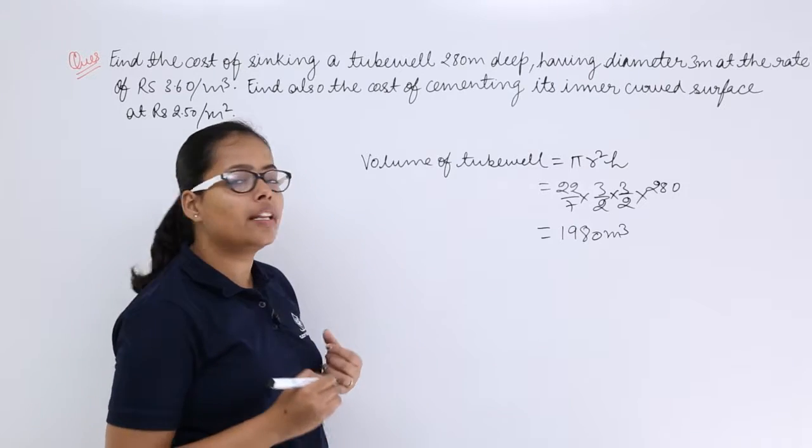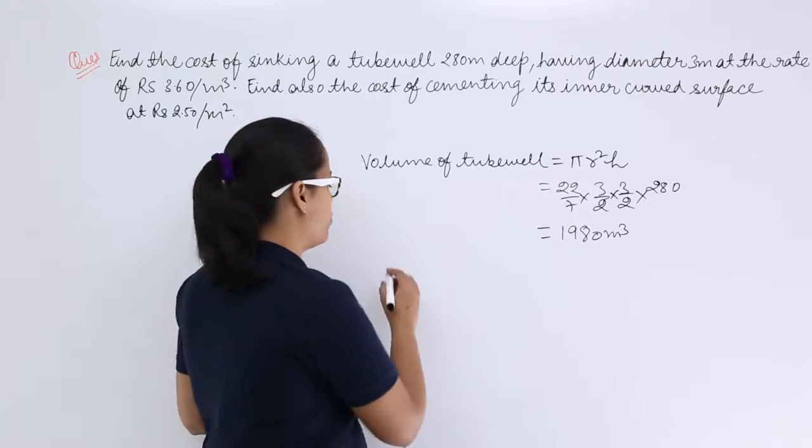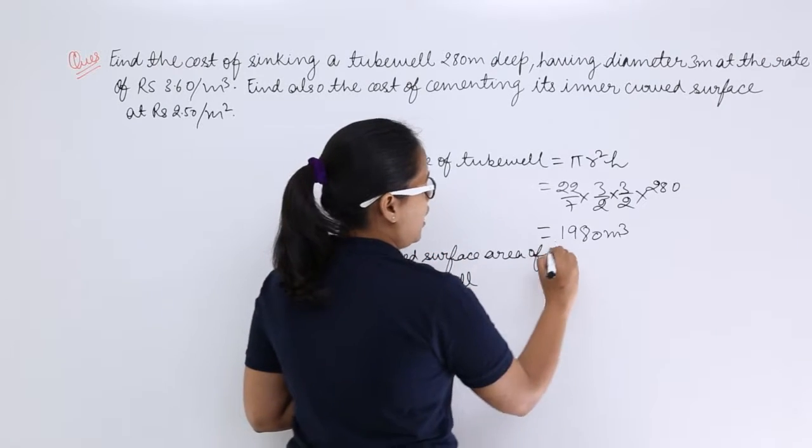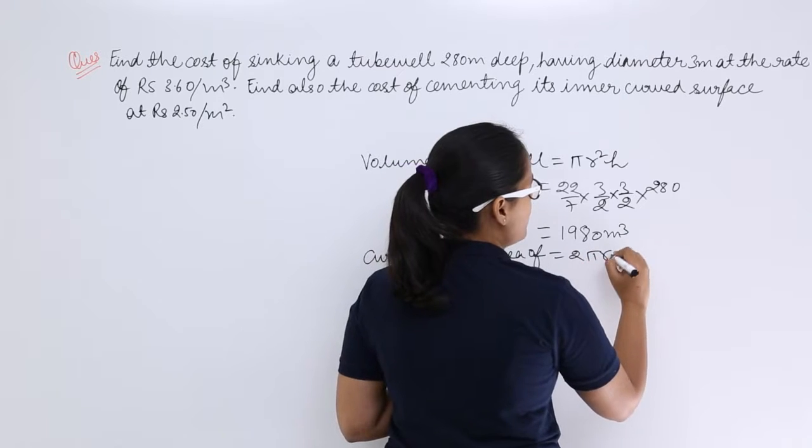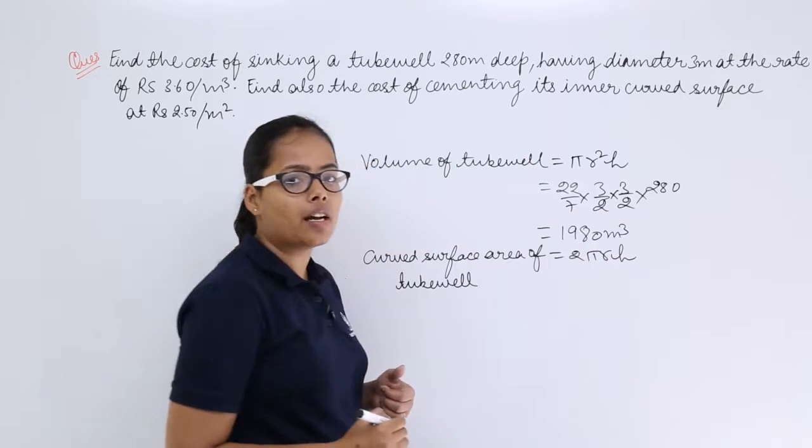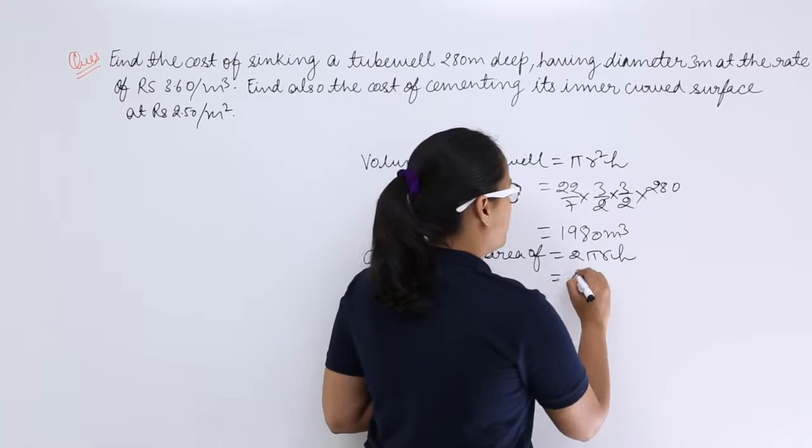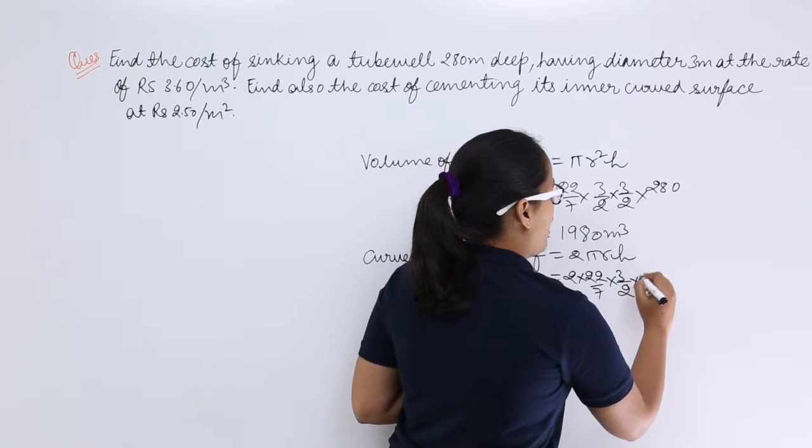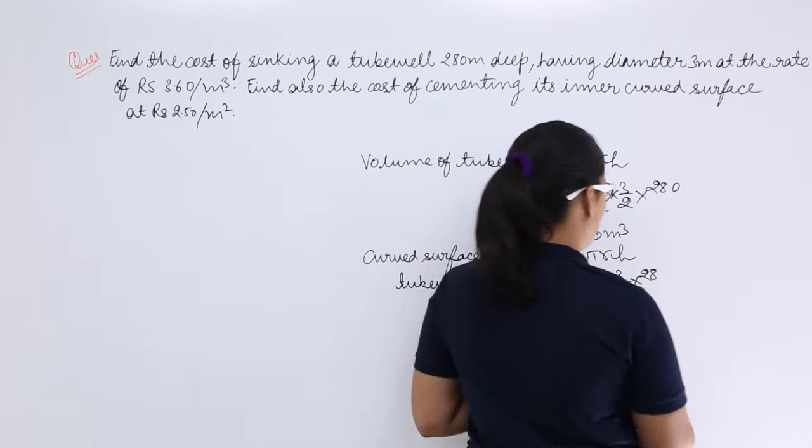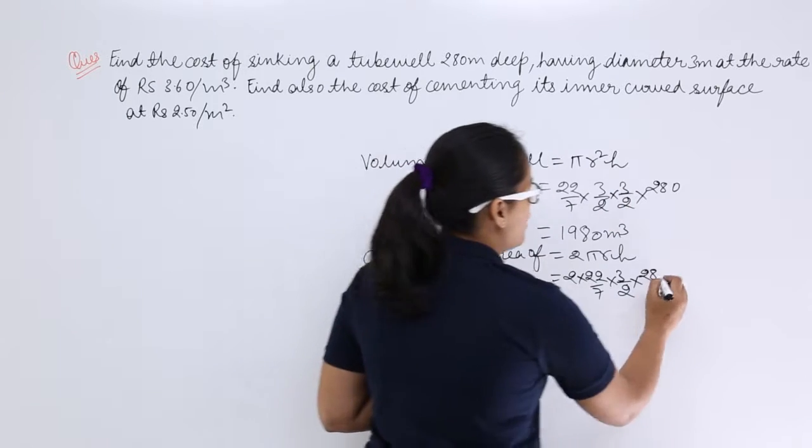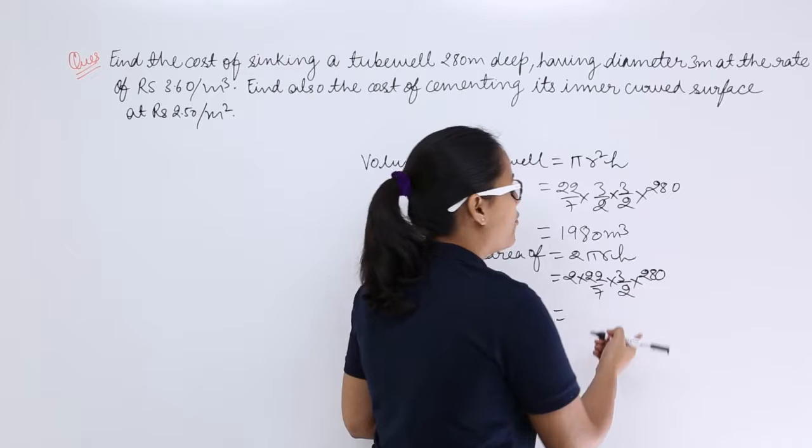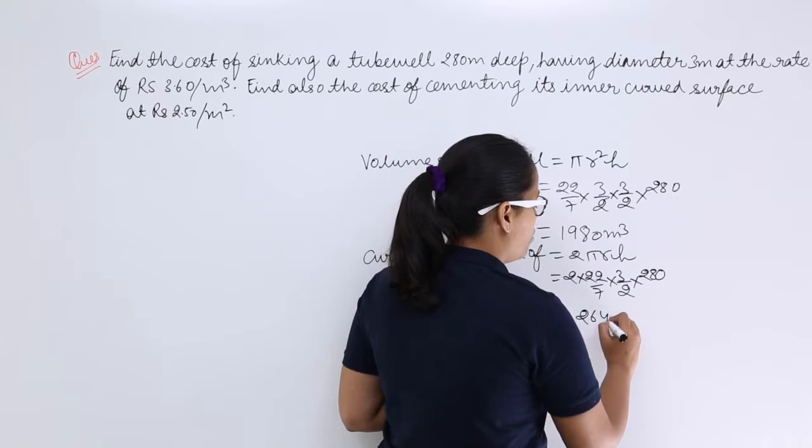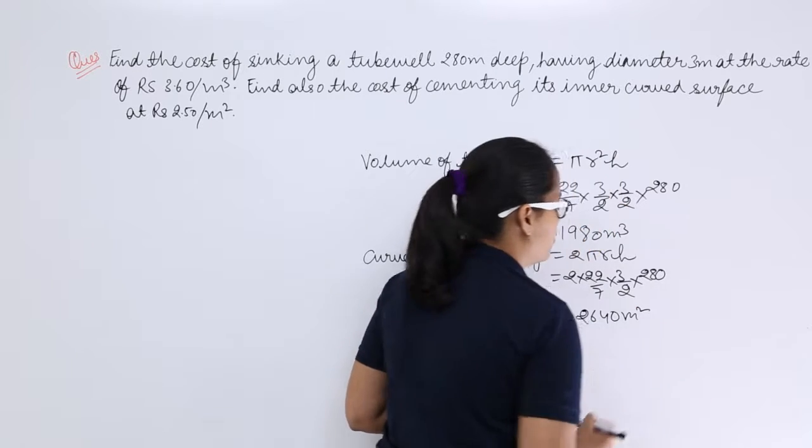Now, let's calculate the curved surface area of this tube well. Curved surface area, and you know that curved surface area of a cylinder is 2πrh. You know the value of r. Let's use the value of r here which is 3 by 2, h is 280. Now, after evaluation what you'll get? After evaluation you'll be getting 2640 meter square.